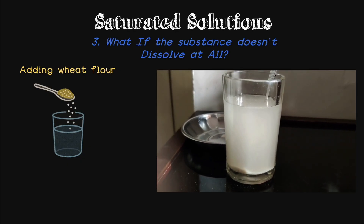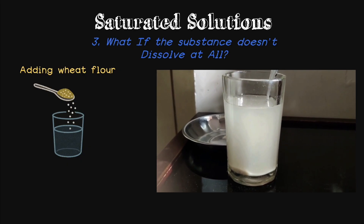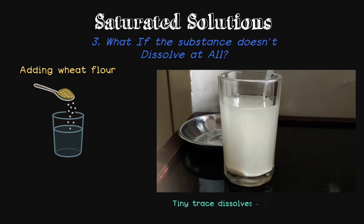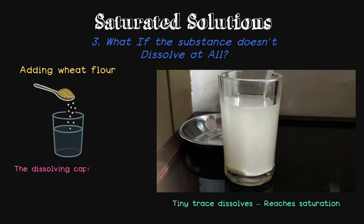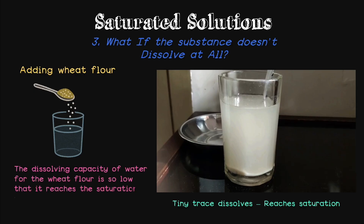What happened here? It is just that wheat flour hardly dissolves. Only a tiny amount slips into the water, and that tiny bit reaches saturation almost instantly. In other words, the dissolving capacity of water for wheat flour is so low that it reaches saturation even with that tiny amount.